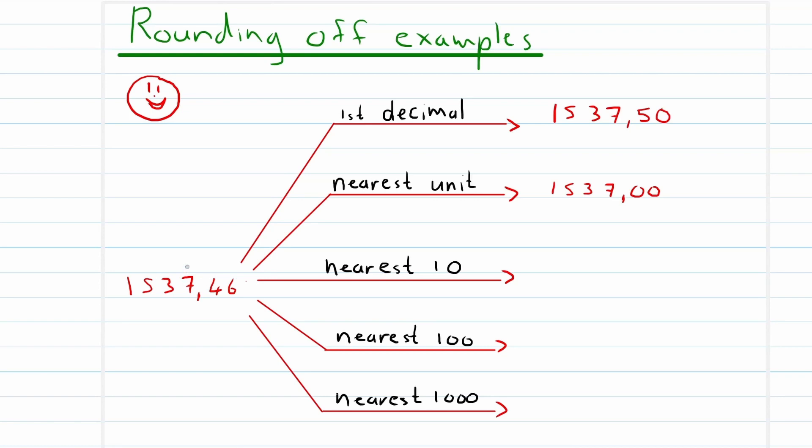So now we're looking at the 7 and how it influences the 3. You can see the 7 is bigger than 5, therefore to the nearest 10, this number is rounded off to 1540.00.